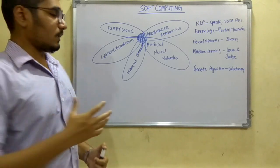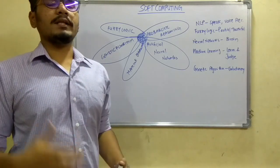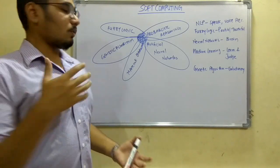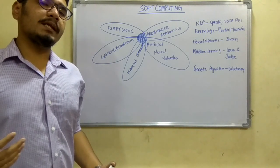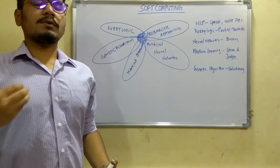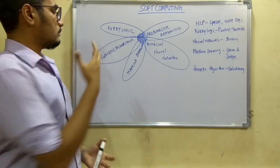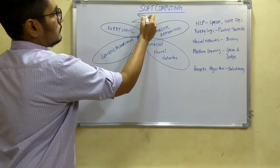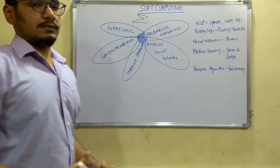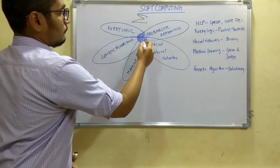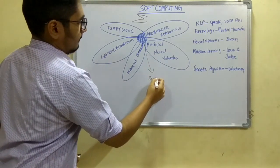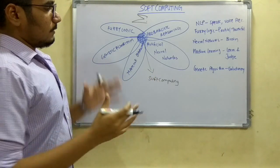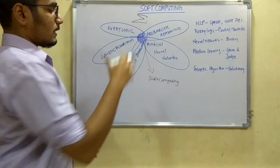We also have machine learning — what the machine should exhibit when there is an obstacle: whether it should stop, go, take a round turn, or a U-turn. All those decisions are classified into machine learning. Then we have the genetic algorithm, which is evolutionary — following inheritance across generations. The summation of all these components — fuzzy logic, probabilistic reasoning, artificial neural networks, machine learning, and genetic algorithm — forms your soft computing.